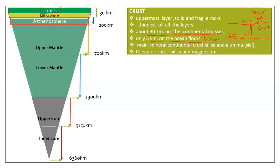The crust is made of two main minerals: silica and aluminium, called SIAL for short. The oceanic crust is a heavier part made of silica and magnesium, which is called SIMA.